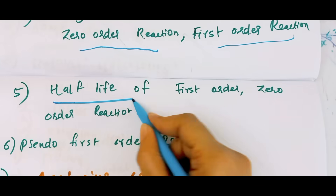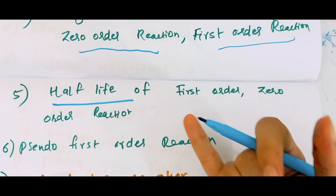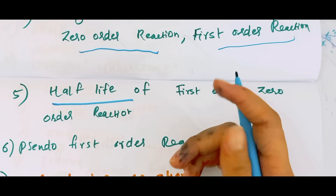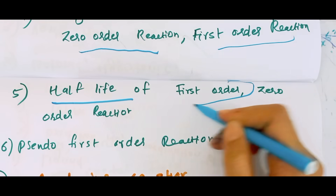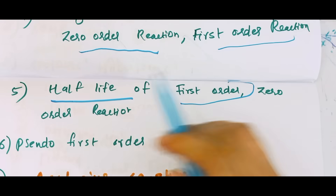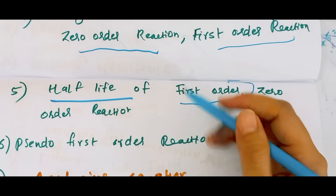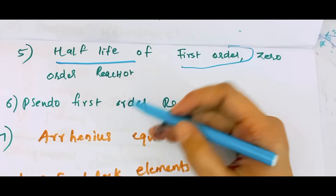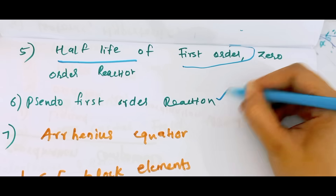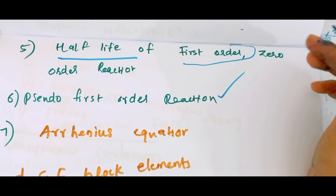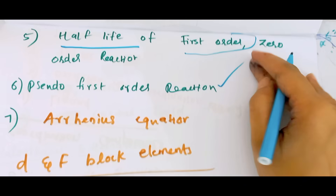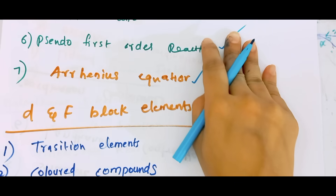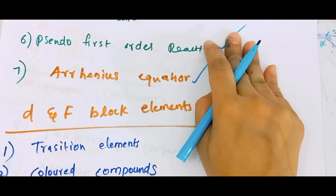Then we will see half-life. What is the half-life? Half-life of first order reaction is derived. Half-life of zero order. What is the pseudo-first order reaction? What is the order of the molecularity? What is the importance of chemical kinetics?